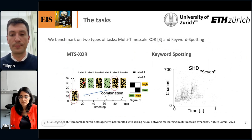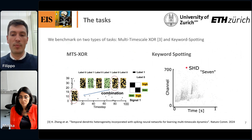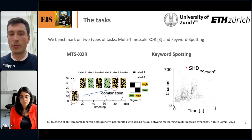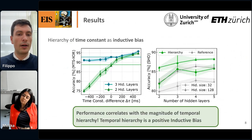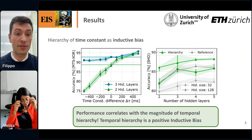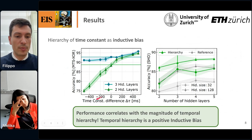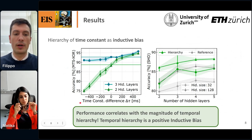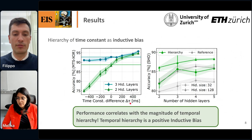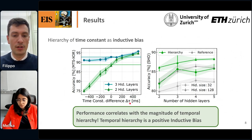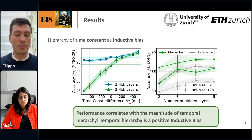For keyword spotting, I used the very popular Spiking Heidelberg Digits (SHD) dataset. Let's discuss the results. Focusing on the plot on the left: the x-axis is the time constant difference in the initialization — I'm working in the inductive bias setting.